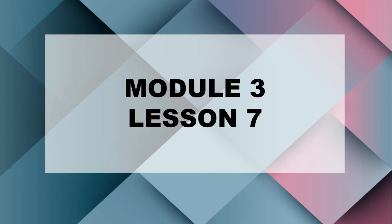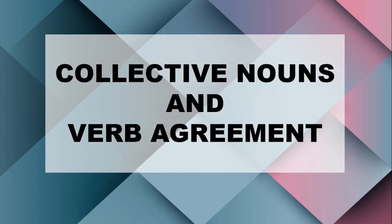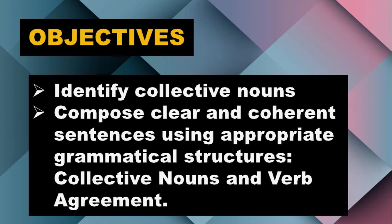We are now on the 7th lesson of our 3rd module. We have a very interesting lesson today. I'm sure you will enjoy learning it. Our lesson would be about collective nouns and verb agreement. Today, you will learn how to identify collective nouns. You will also learn how to compose clear and coherent sentences using appropriate grammatical structures about collective nouns and verb agreement.